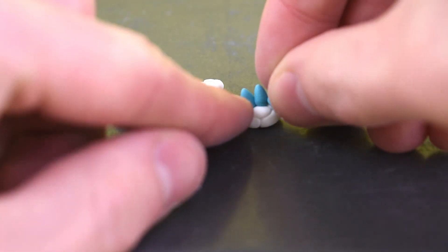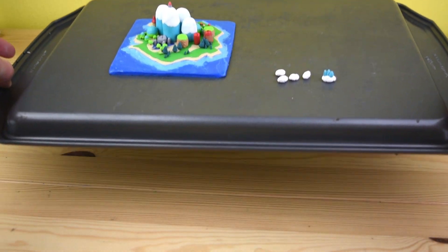These little triangles are the buildings that go on top of the biggest cloud. We'll use a marker to add in some more details, but for now we are ready to get baked.